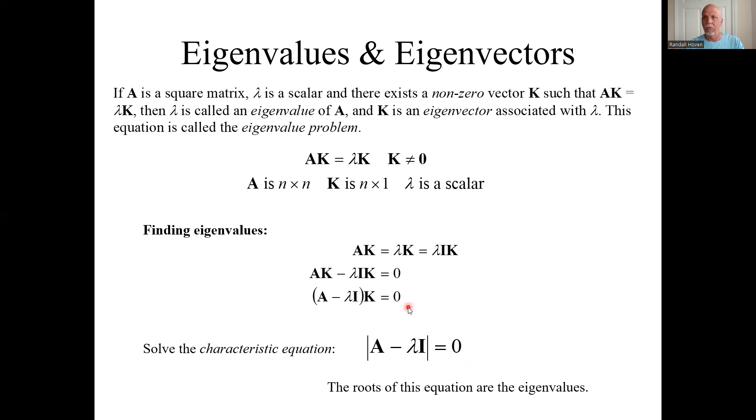If it's not zero, it would have exactly one solution, remember. And that would be the trivial solution. And we don't want the trivial solution. So we want the determinant to be zero.